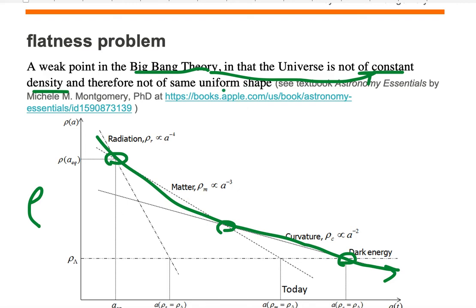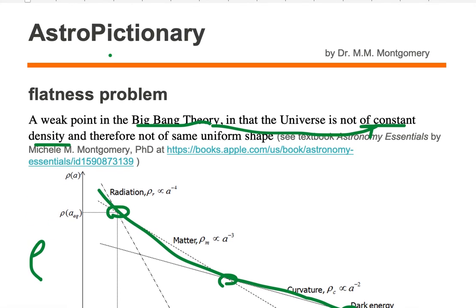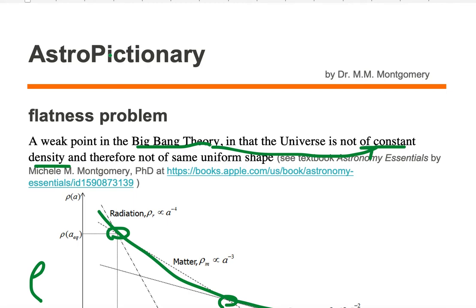Since density changes over time, the shape must change over time, and we cannot always have a flat shape. This problem or conundrum in the Big Bang Theory is known as the flatness problem.